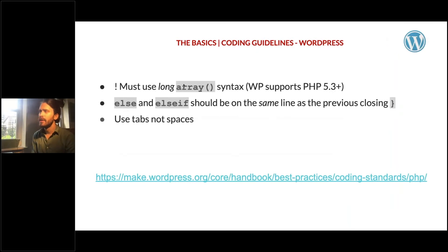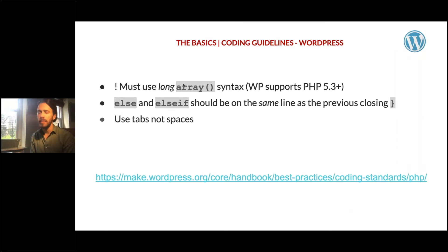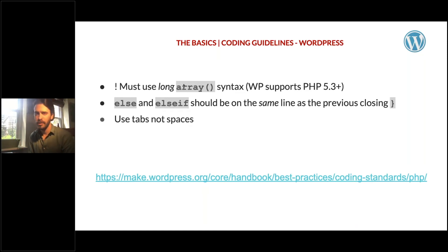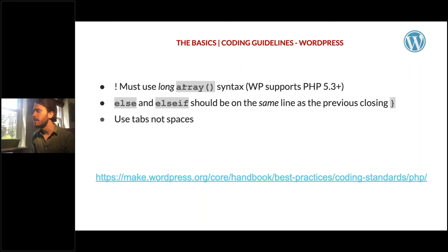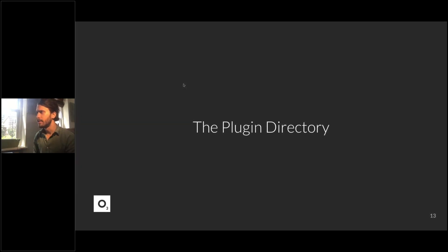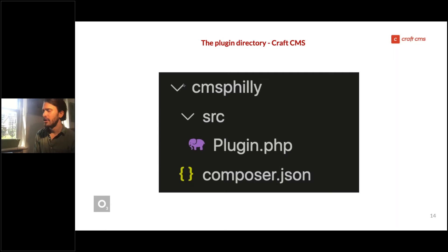Perhaps the most important coding guideline for WordPress: when you're developing a custom plugin, you must use the long array syntax, at least right now, because WordPress plugins are supposed to work with PHP 5.3, which didn't have the short array syntax with brackets. Else and else-if should be on the same line as the previous closing brace, and use tabs, not spaces.